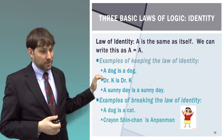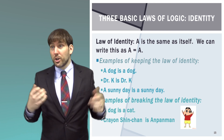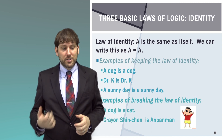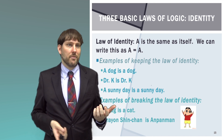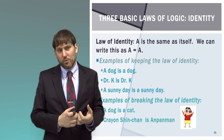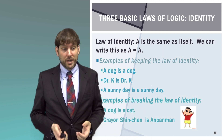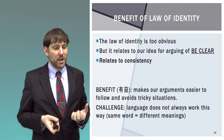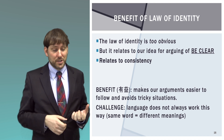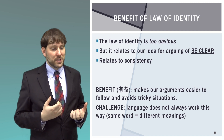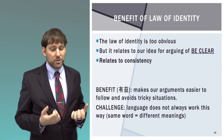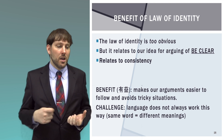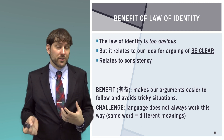Examples of keeping the law of identity: a dog is a dog, Dr. K is Dr. K, a sunny day is a sunny day. Breaking the law of identity would be if earlier in an argument I refer to something as a dog, but later call it a cat, or if I say Crayon Shinchan is Anpanman — these things are not the case. This law relates to being clear and consistent in arguments, making them easier to follow. The challenge is that language doesn't always work this way — sometimes the same word has different meanings in different contexts, which we should avoid.